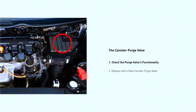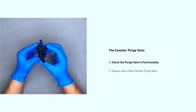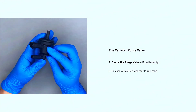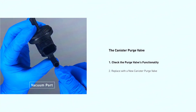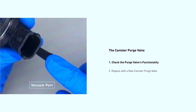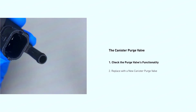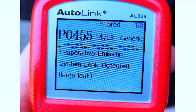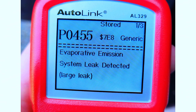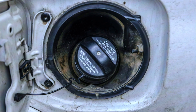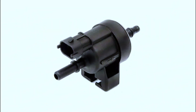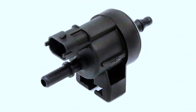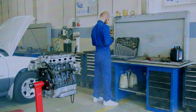If the gas cap isn't the problem, it might be the purge valve itself. Locate the purge valve — it's usually near the engine intake manifold. Disconnect the electrical connector and any vacuum lines, then unscrew and remove the purge valve. Install the new purge valve and reconnect everything. Clear the trouble code with your OBD2 scanner. This fix requires a bit more work, so if you're not comfortable doing it yourself, take your car to a mechanic.